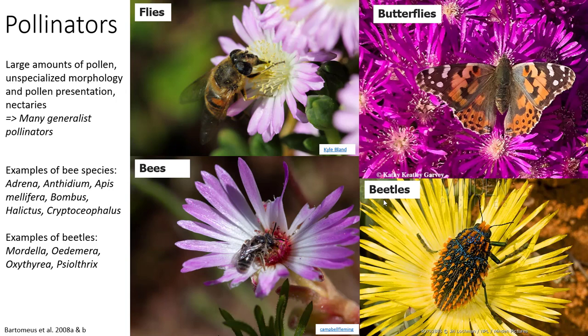Aizoaceae flowers in general, even the small ones, produce large amounts of pollen and have unspecialized morphology, so pretty much any insect or animal can access them. As a result, they are visited by a wide variety of generalized pollinators — mostly bees and beetles, but also flies and butterflies.